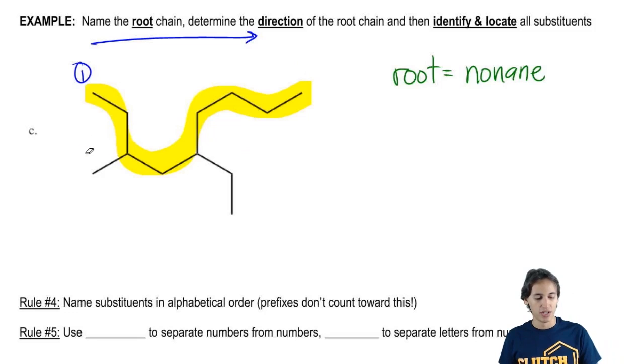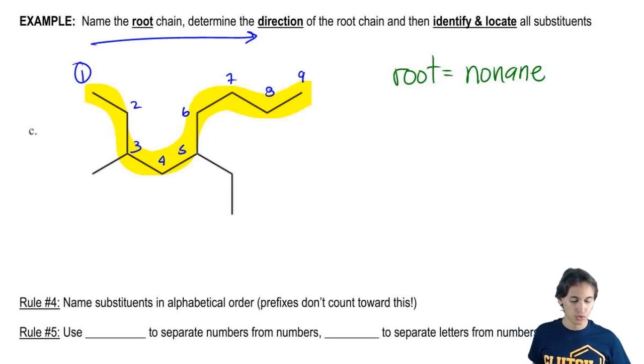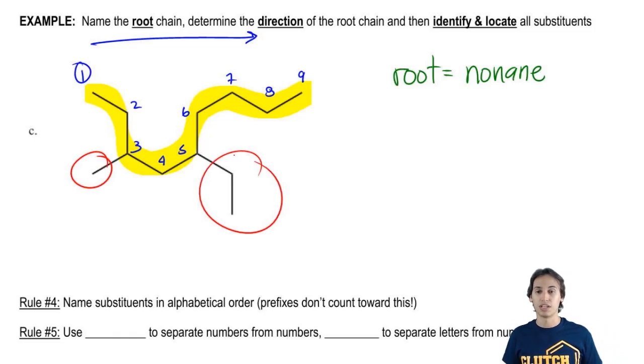So now I have my numbering determined. Now I have to identify and locate all the substituents. The easiest way to do this is just to number the entire chain. So I'm just going to say two, three, four, five, six, seven, eight, nine. How many substituents do I have? I have two. I have one on the three and one on the five.